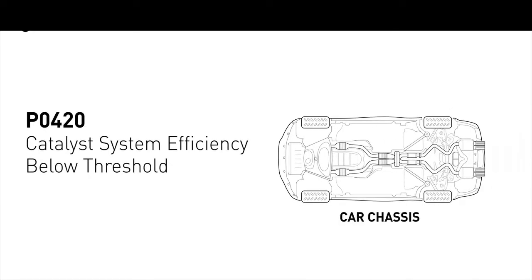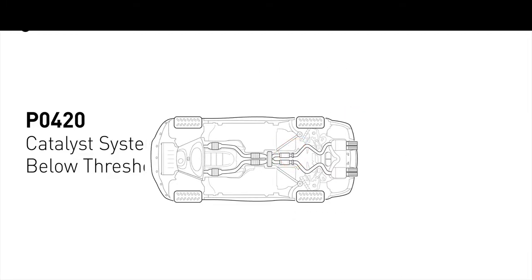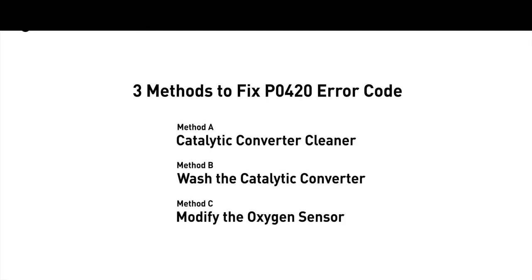P0420 is one of the most common error codes. It means your catalyst system efficiency is below threshold near engine bank 1, which indicates that the catalytic converter is not functioning efficiently, so the vehicle is increasing the output of harmful pollutants. Here are three simple DIY methods you can try to solve this problem.